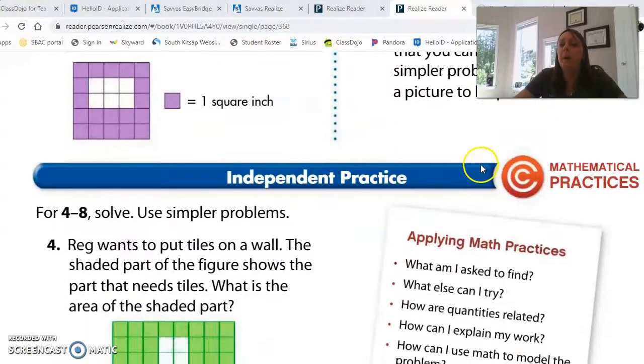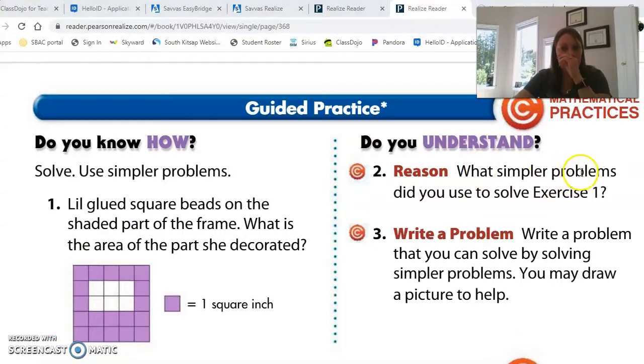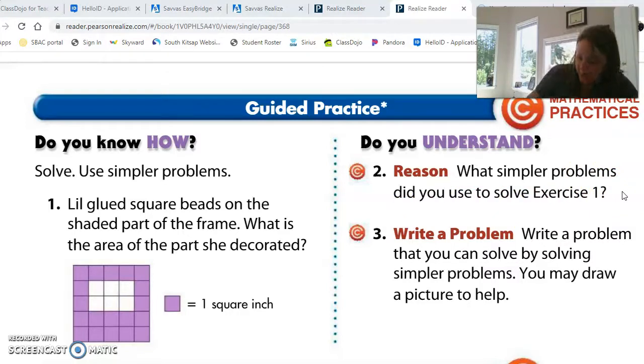What simpler problems did you use to solve exercise one? First, remember our keywords for writing down our mathematical thinking. First, I figured out the area of the, that's actually a square. The whole square. Say the whole square, with a W-H-O-L-E. The whole square.